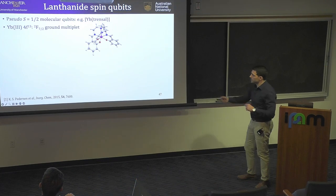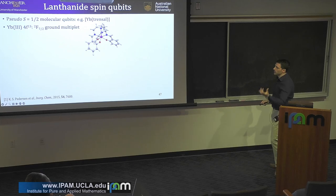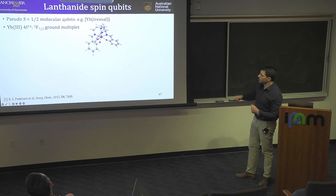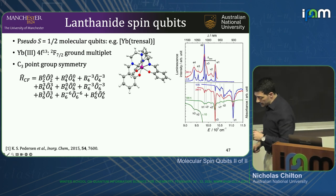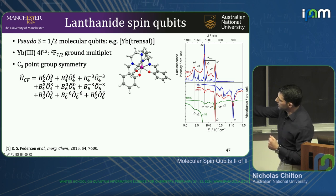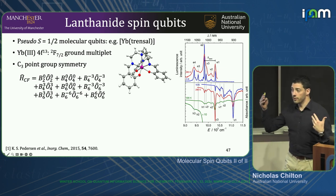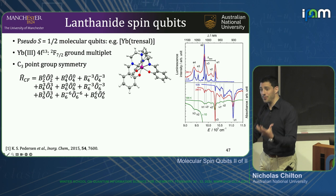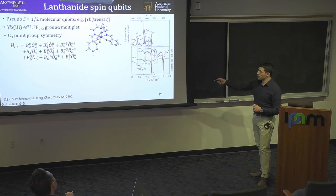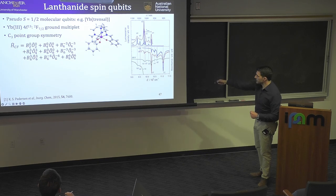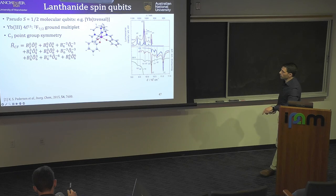Here's an example: a terbium trensal. This is terbium-3, which is F13 — it has one hole in the F shell. You get a doublet F ground Russell-Saunders term. After spin-orbit coupling, the lowest total angular momentum state is J = 7/2, and that's your ground multiplet. It's a neutral molecule, it can sublime, and has a well-defined C3 point group symmetry in the solid state. The crystal field Hamiltonian — in Stevens notation — is a spherical harmonic decomposition in terms of the molecular symmetry, and you can measure exactly where these levels are with luminescence or absorption spectroscopy. This is all well known.